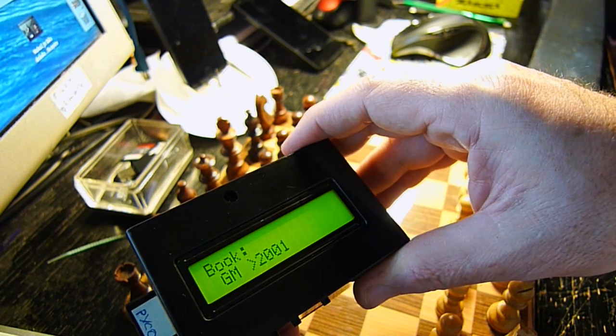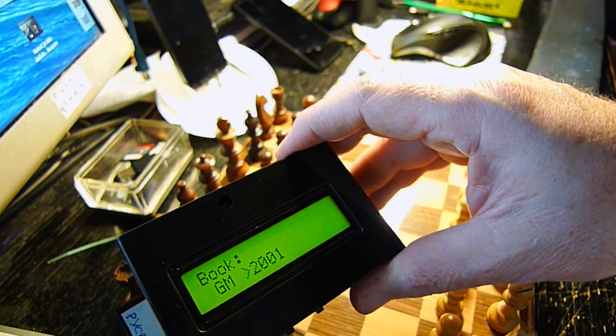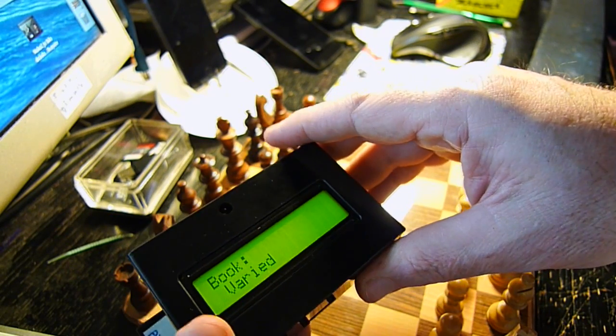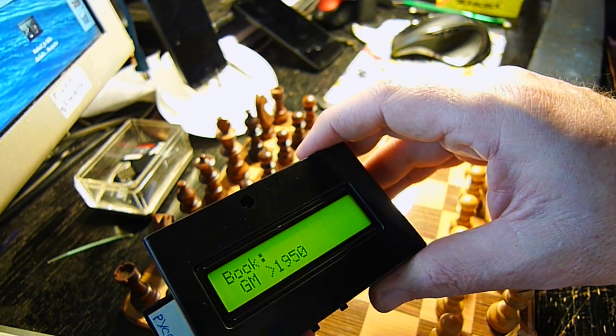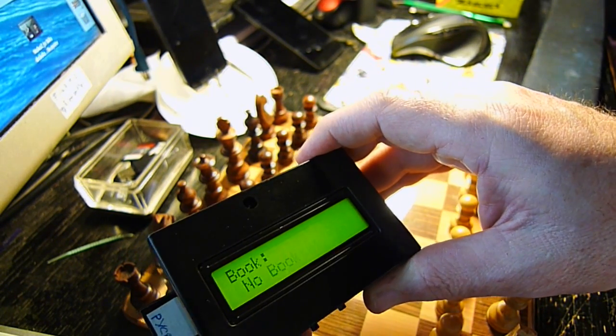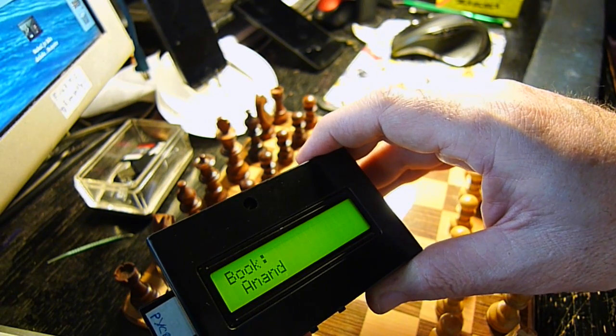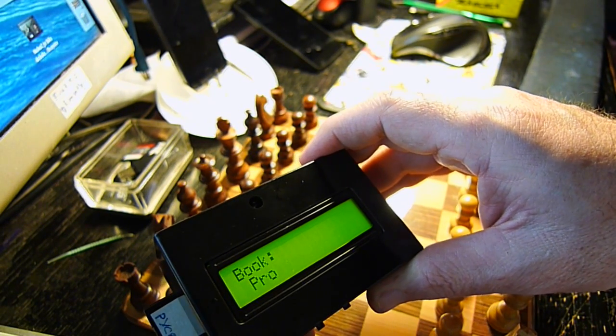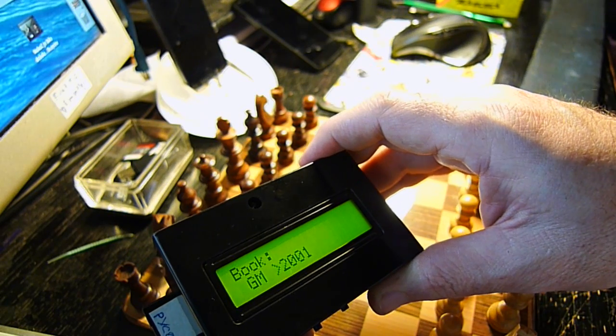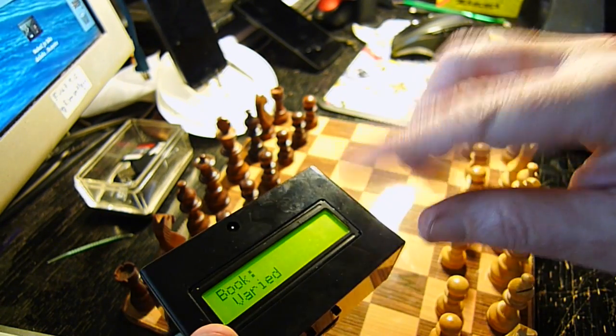The second button is for setting the book. Grandmaster book, varied book, this one is okay, but there are of course others. Performance, Stockfish, no book at all, fun book, Anand, Korchnoi, Larsen, Pro, GM, and again varied. Okay.